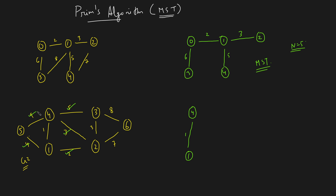Among all adjacent edges, pick the minimal. The minimal is 2, so you pick it — connecting you to node 2. Now check all adjacent edges for these three nodes: for node 1 it's 4, for node 4 it's 5, 9, and 3, and for node 2 it's 3 and 7. The minimal is 3, but we are not going to pick it. The reason is: if we pick it, we form a cycle, and a minimum spanning tree cannot have a cycle by definition.